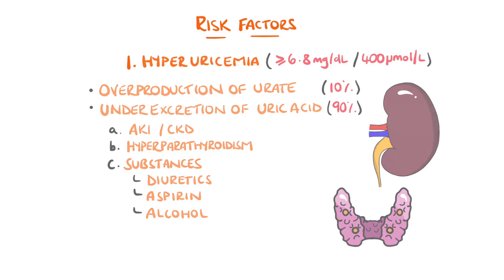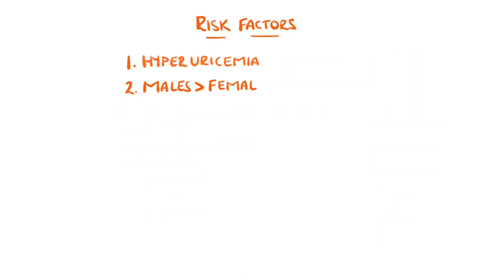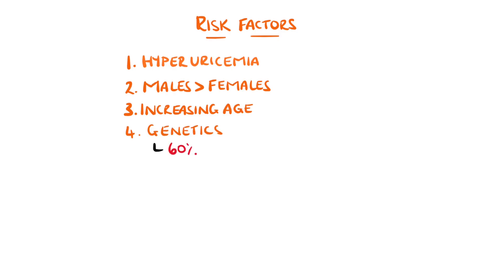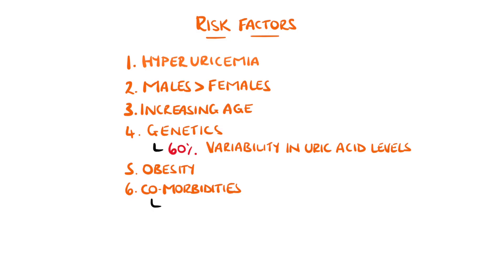Other factors include being male — and in particular, gout is rare before the menopause in females, suggesting a hormonal involvement. Increasing age and genetics, which is thought to cause 60% variability in uric acid levels, also increase the risk. Obesity and comorbidities also play a role in urate levels and the development of gout.